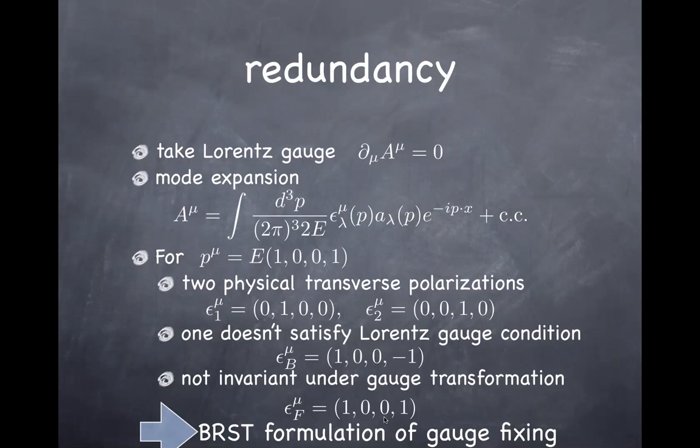So this is gauge invariance at work: we are using gauge transformation to remove degrees of freedom from the description, reducing redundancy, and ending up with a Hilbert space that describes only the degrees of freedom we really need. We'll come back and talk more about this later, but I hope you get some idea of how gauge invariance removes redundancy in the description.